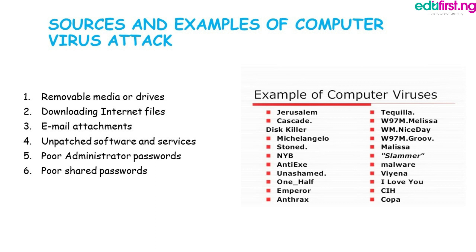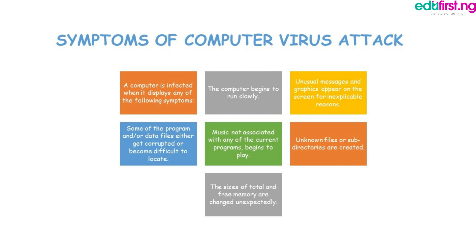Now, what are the symptoms of a computer virus attack? How do you know that your device or computer has been infected? A computer is infected when it displays any of the following symptoms: the computer begins to run slowly; unusual messages and graphics appear on the screen for inexplicable reasons; some program or data files get corrupted or become difficult to locate; unknown files or subdirectories are created; the sizes of total and free memory change unexpectedly; and at times your computer can just be malfunctioning and controlling itself.